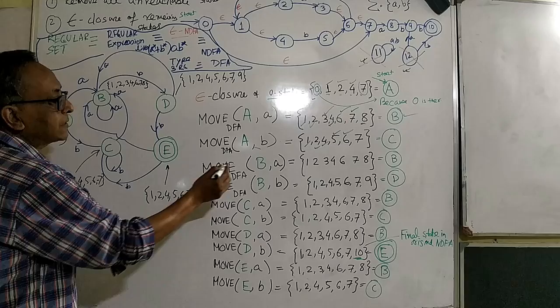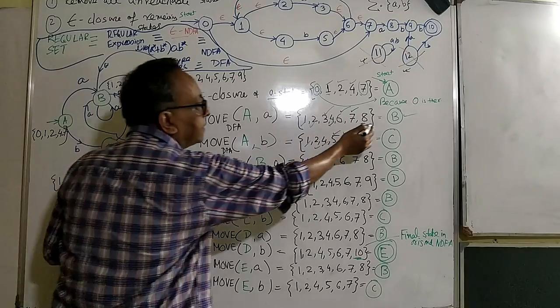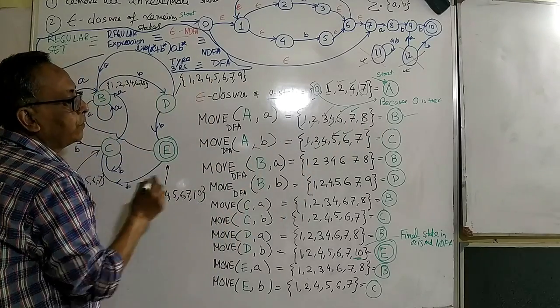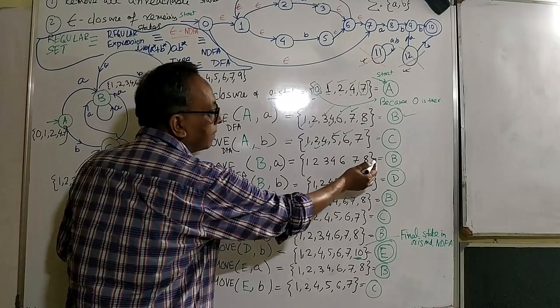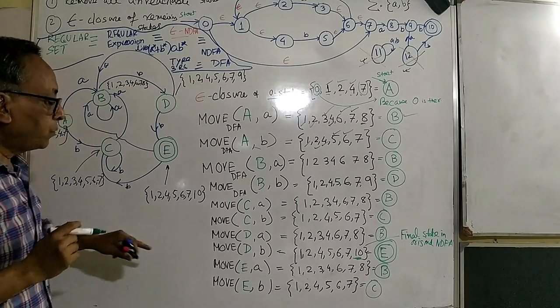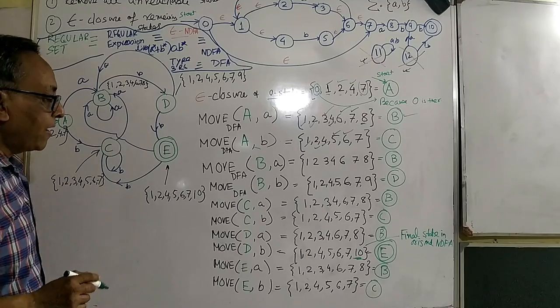In that way, you can always calculate now, you can, this is a state B. And you try with A and B. And you get it, the B and D. In this way, if you go for five states, you can receive them.